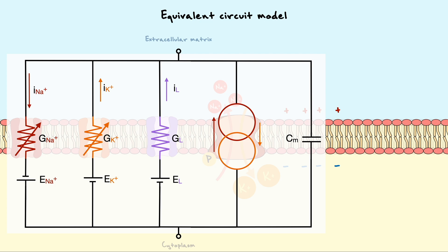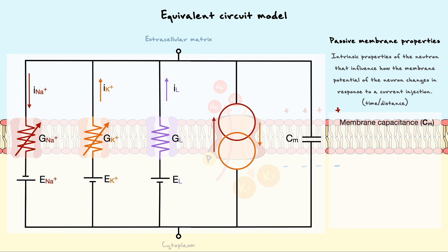Along the way, we will discuss three important passive membrane properties. To generally describe them, passive membrane properties are intrinsic properties of the neuron that influence how the membrane potential of the neuron will change in response to a current injection as a function of time and distance. We have already seen two of the three properties. The first property is the membrane capacitance, the second is the membrane resistance or conductance, depending on how you see it, and the third property is the axial resistance.